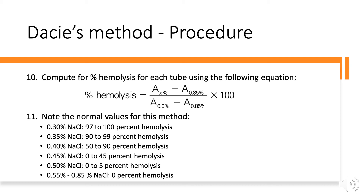To compute the percent hemolysis for each tube, use the following equation: Percent hemolysis = (absorbance of the tube in question − absorbance of the 0.85% NaCl tube) ÷ (absorbance of the 0% NaCl tube − absorbance of the 0.85% NaCl tube) × 100.